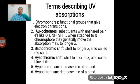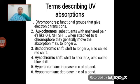Some important chromophores include NO₂, N=O, N=N, C=O, C=N, C=C, C=S, etc. So, chromophore means the isolated functional group which is capable of absorbing UV radiation.